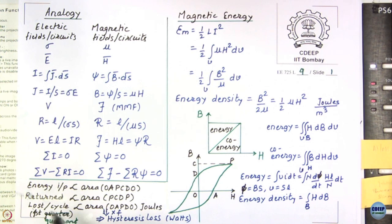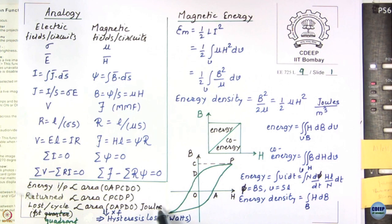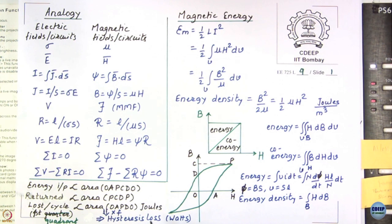Loss per cycle in the first quadrant is proportional to area OAPDO in joules. Adding the areas from all four quadrants gives energy loss per cycle. Multiplying by frequency F (cycles per second) gives hysteresis loss in watts, since energy × frequency = power. Therefore hysteresis loss is proportional to F, whereas eddy current loss, as we will see later, is proportional to F².